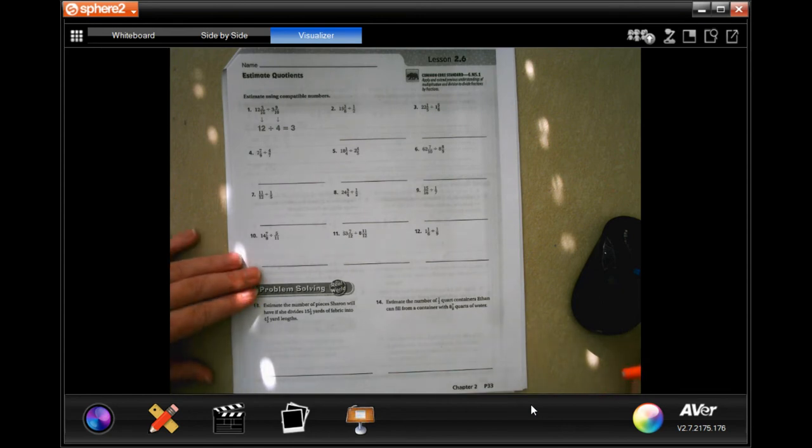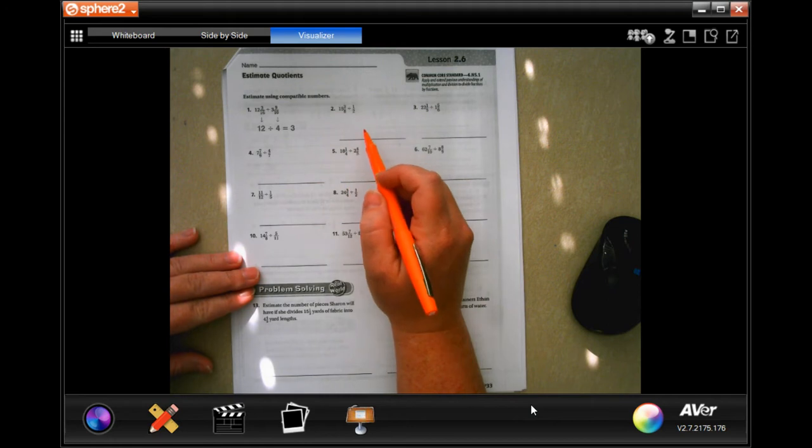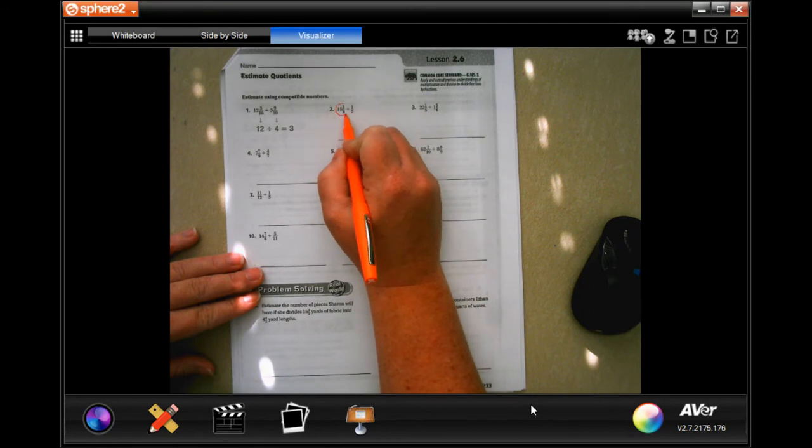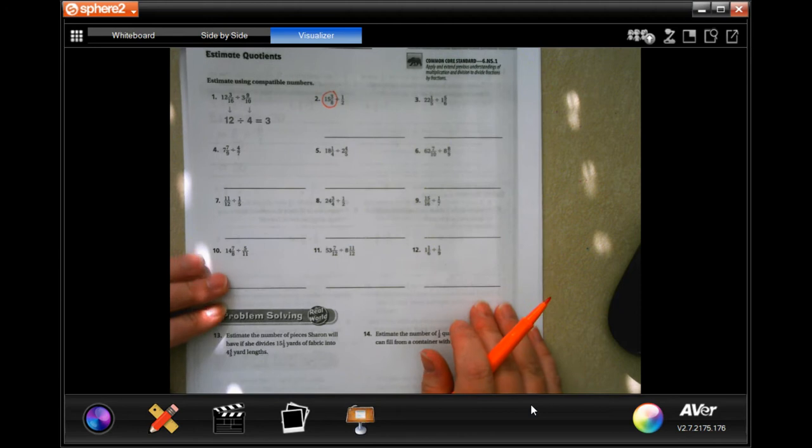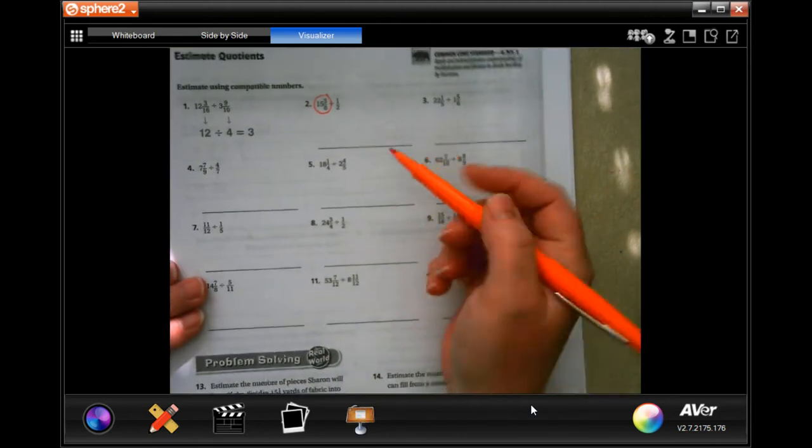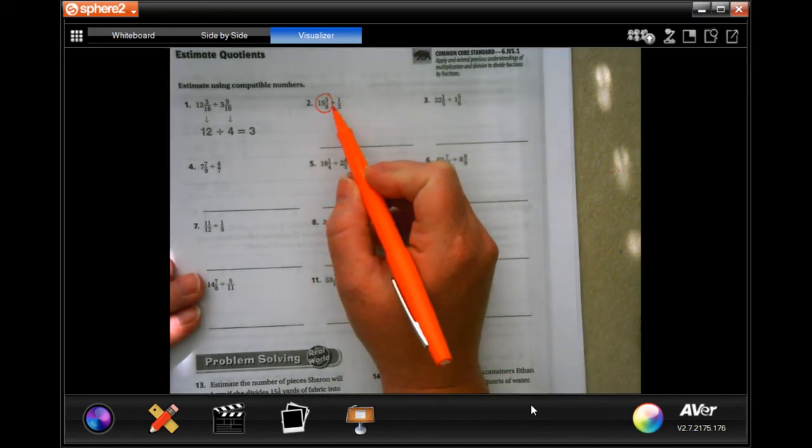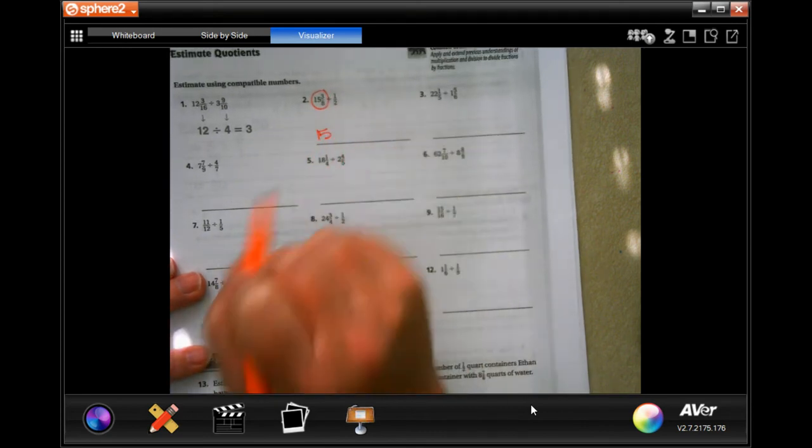For these, it's not actually asking you to complete the problem as it is. It's asking you to estimate and give them an estimate. So if you look at this, 15 and 3 eighths. If you'll notice that 3 is less than half of 8, which means that we're going to round that to 15.